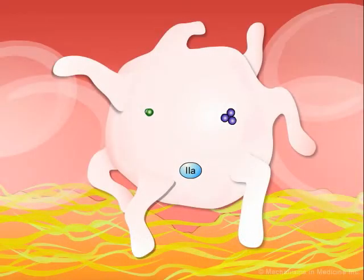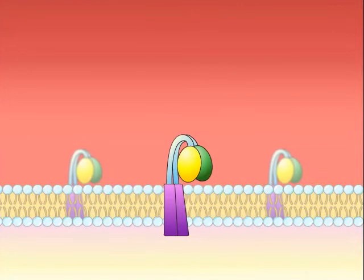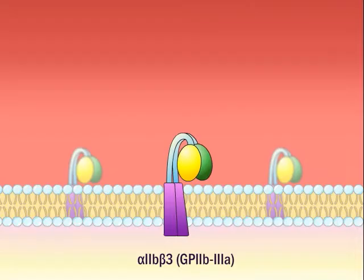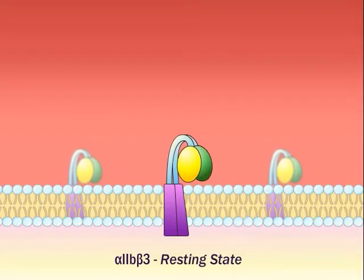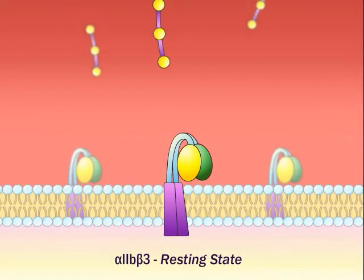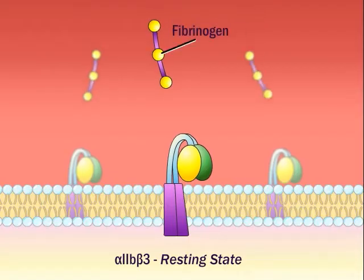Aggregation is an active metabolic process. Binding of any of the agonists to their respective membrane receptors initiates signaling pathways that ultimately convert integrin alpha-2b-beta-3 or GP2b-3a from a low affinity resting state to a high affinity activated state for binding extracellular soluble ligands such as plasma fibrinogen and von Willebrand factor.